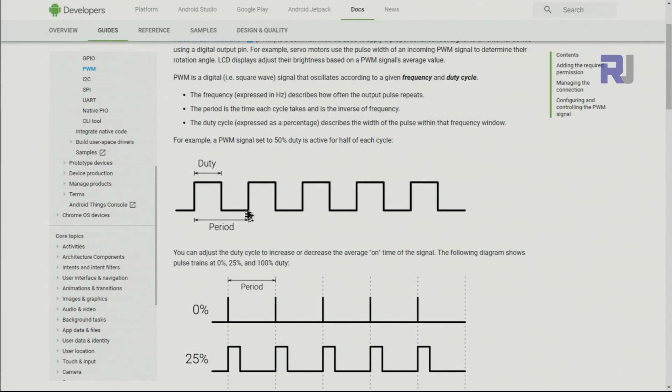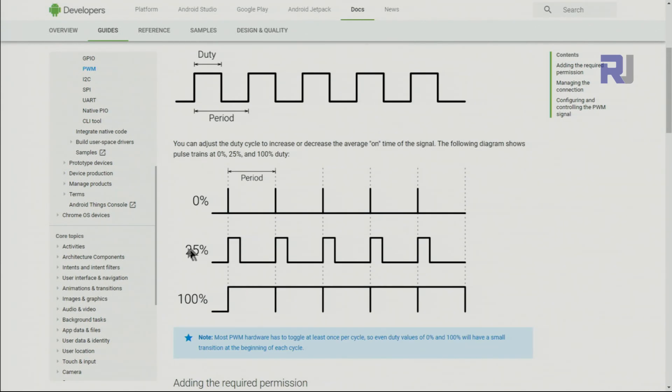And this one is now 50% because it's 50% of the time it's high. And here the duty cycle is zero, and this is 25%. If you look from here to here, one quarter it's high and three quarters it's low. And this is 100% because it's always on.